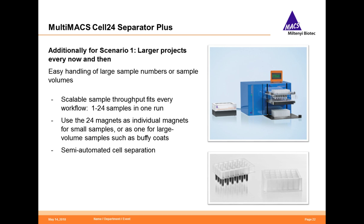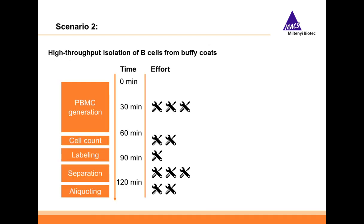Now that we've discussed scenario one, let's look at the next customer: high-throughput isolation of B cells from buffy coats. Looking at the workflow — you'll recognize this from earlier — it goes from PBMC generation, cell count, labeling, separation, and aliquoting of the cells. This takes well over two hours, with a major chunk of the time going into the PBMC generation. The effort here is the density gradient centrifugation with identification steps, cell counting, and having to wait for the centrifuge. This step takes a lot of time, is very hands-on, and cannot be automated.